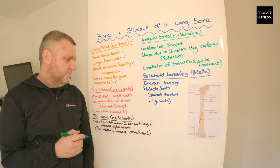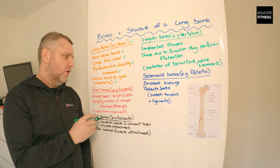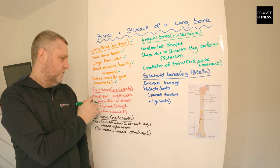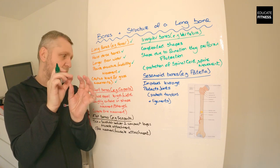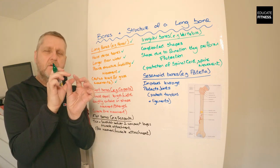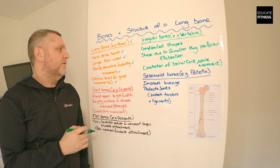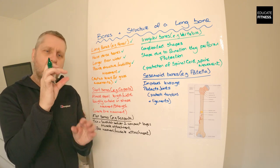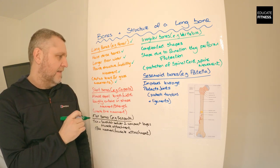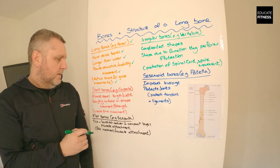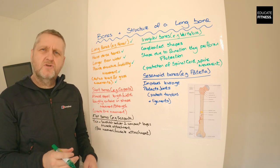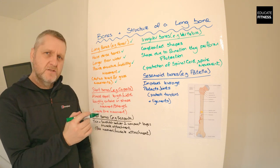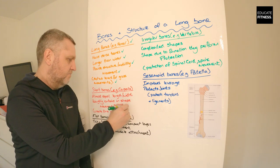Next we've got short bones. A good example of short bones is the carpals in our hands. The carpals are roughly cuboid in shape and they're almost equal in length and width — unlike long bones which are longer than wider. Short bones allow movement and also create strength. The key thing to remember is they create fine movement.